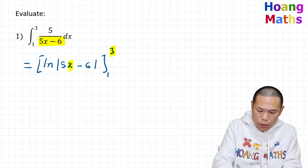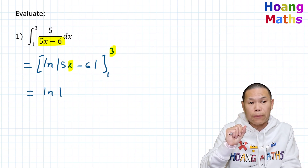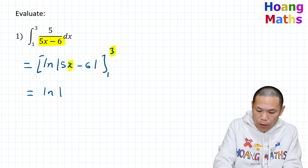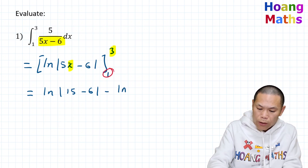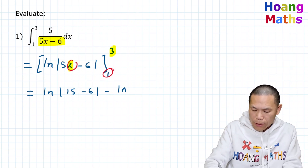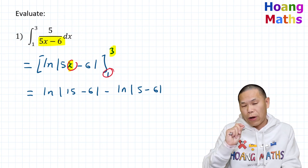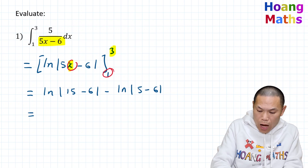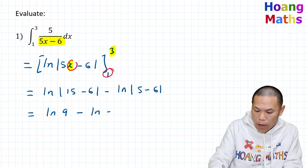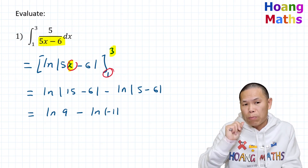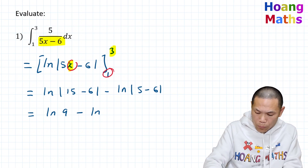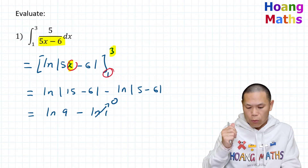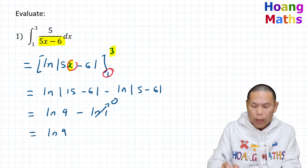We replace x with 3: 5 times 3 is 15, and 15 minus 6 is 9. So that is ln of 9. Then minus: replacing x with 1, 5 times 1 is 5, and 5 minus 6 is negative 1. So that is ln of absolute value of negative 1. That gives ln of 1, which equals 0.